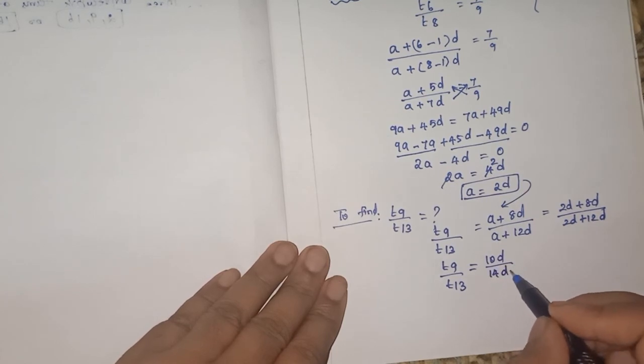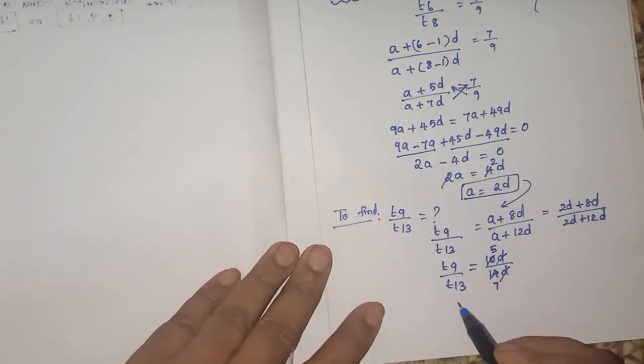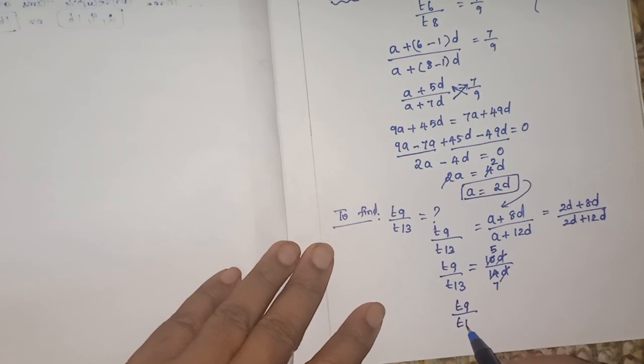T9 by T13 is equal to 2D plus 8D is 10D by 2D plus 12D, 14D. So this D, D we can cancel, and we can go for 2 tables. 5 twos are 10, 7 twos are 14. So what is our T9 by T13? It is nothing but 5 by 7.